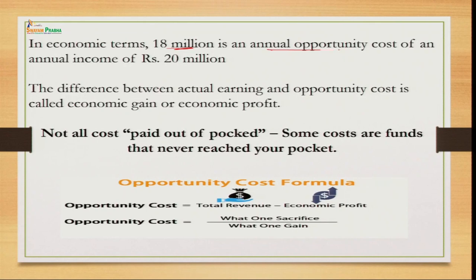In economic terms, this 18 million is the annual opportunity cost of earning 20 million. You will earn 20 million from the best alternative chosen, but 18 million is your annual opportunity cost. Now, why do we compare this? Why talk about the alternative we have already sacrificed?